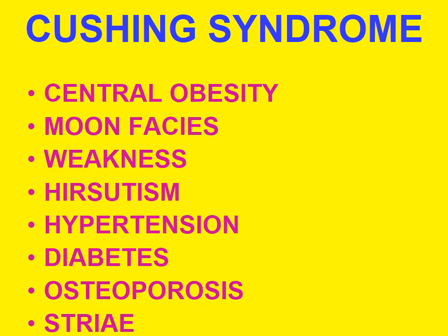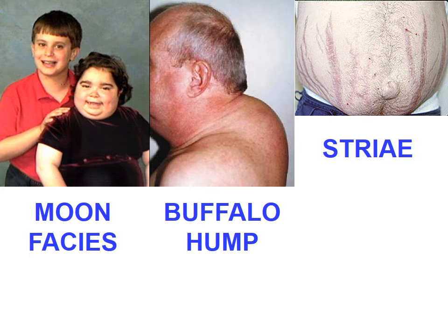Bone resorption and osteoporosis increase the risk of fractures, and there are mental disturbances and depression. This picture shows typical moon facies of children with Cushing syndrome and the characteristic fat distribution like a buffalo hump and purple striae on the abdomen.